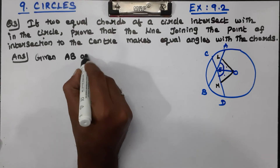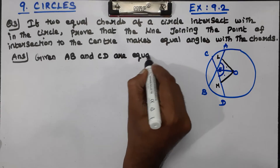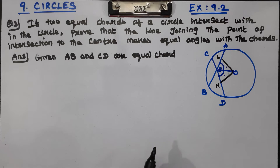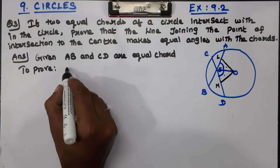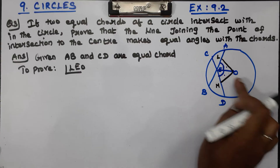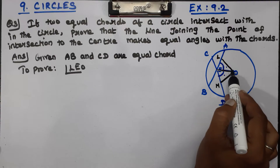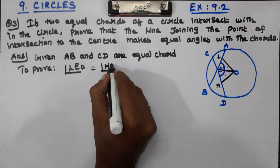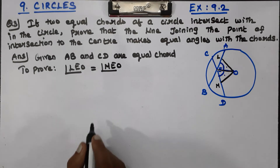Given: AB and CD are equal chords. To prove: the line joining the midpoint and the intersecting point — that angle LEO is equal to angle MEO. This angle is equal. Now, construction.